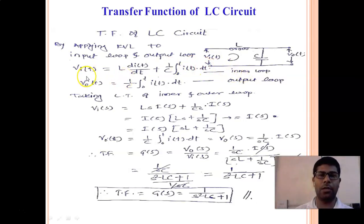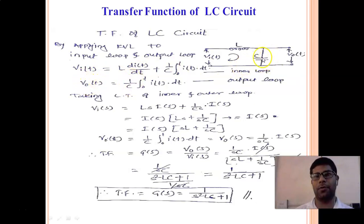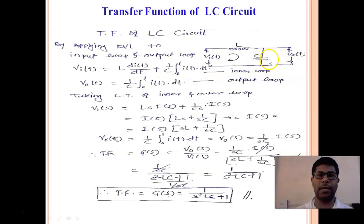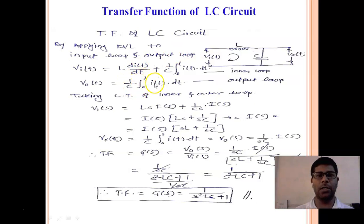Now, what is the output loop equation? V₀(T) is equal to 1/C. For the output loop, there is only one component — only C. While applying KVL to the inner loop, there are two components L and C, so we calculate for both L and C. For the outer loop, there is only C, so: V₀(T) = 1/C · integral from 0 to T of I(T)·dT.